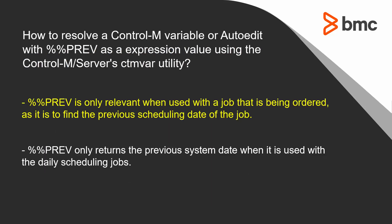The variable with the expression value PREV is only relevant when used with a job that is being ordered, as this variable defines the previous scheduling date of the job. That means this variable only returns the previous system date when it is used with a daily scheduling job.